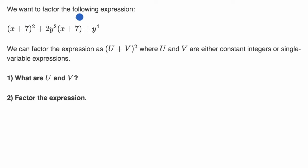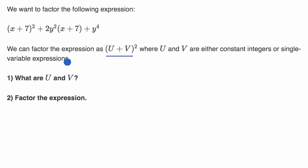We want to factor the following expression. They say we can factor the expression as u plus v squared, where u and v are either constant integers or single variable expressions. What are u and v? Then they ask us to actually factor the expression. Pause this video and see if you can work on that.